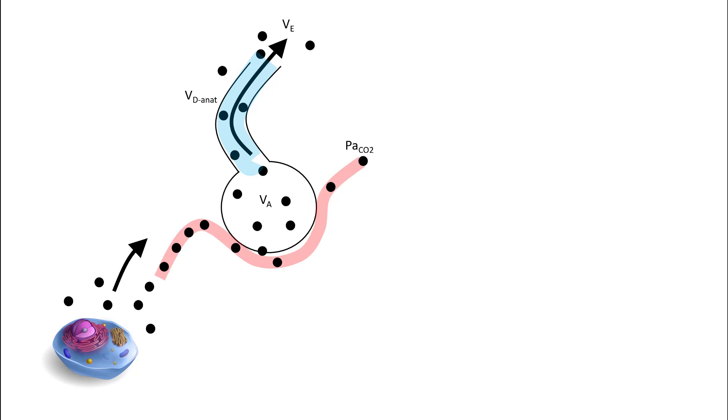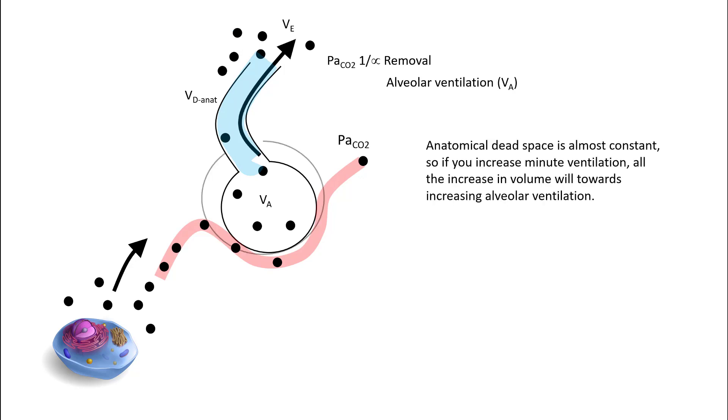The second process, which is the removal of CO2, is the more important one which controls the PaCO2. So PaCO2 will be lower if your removal of carbon dioxide increases, and this increase happens because of increase in alveolar ventilation. You know the alveolar ventilation is nothing but minute ventilation minus anatomical dead space. One of the things you have to understand is that anatomical dead space is constant. So if you increase the minute ventilation, all the increase in volumes will go towards increasing the alveolar ventilation. So in this case, the tidal volume has increased. As your minute ventilation increases, so does your alveolar ventilation, and your PaCO2 drops.